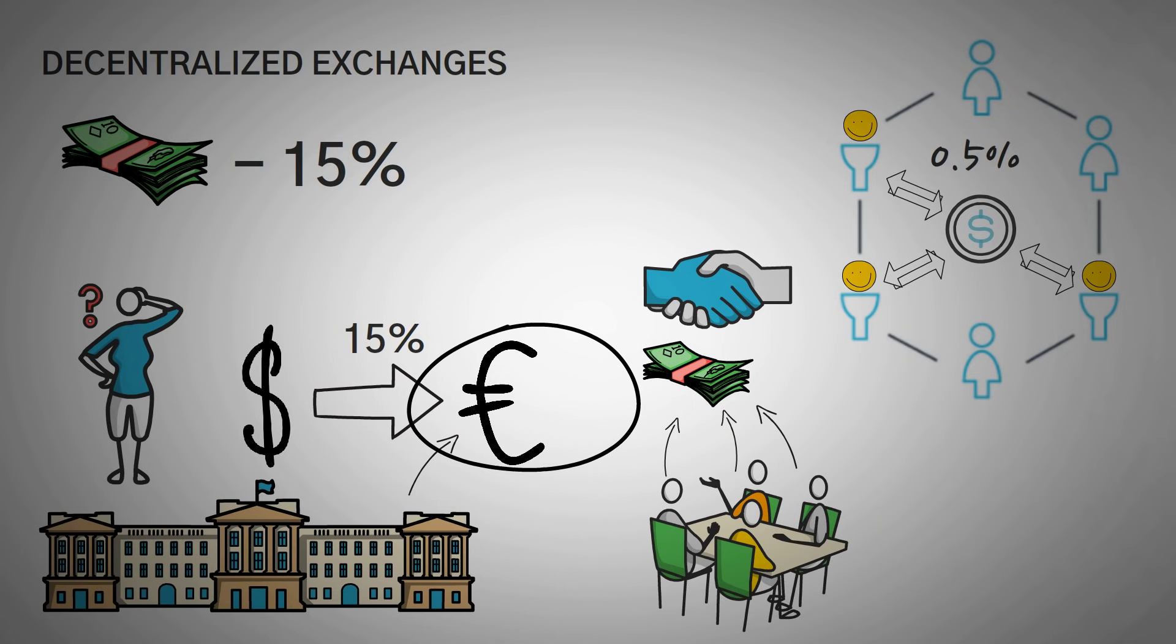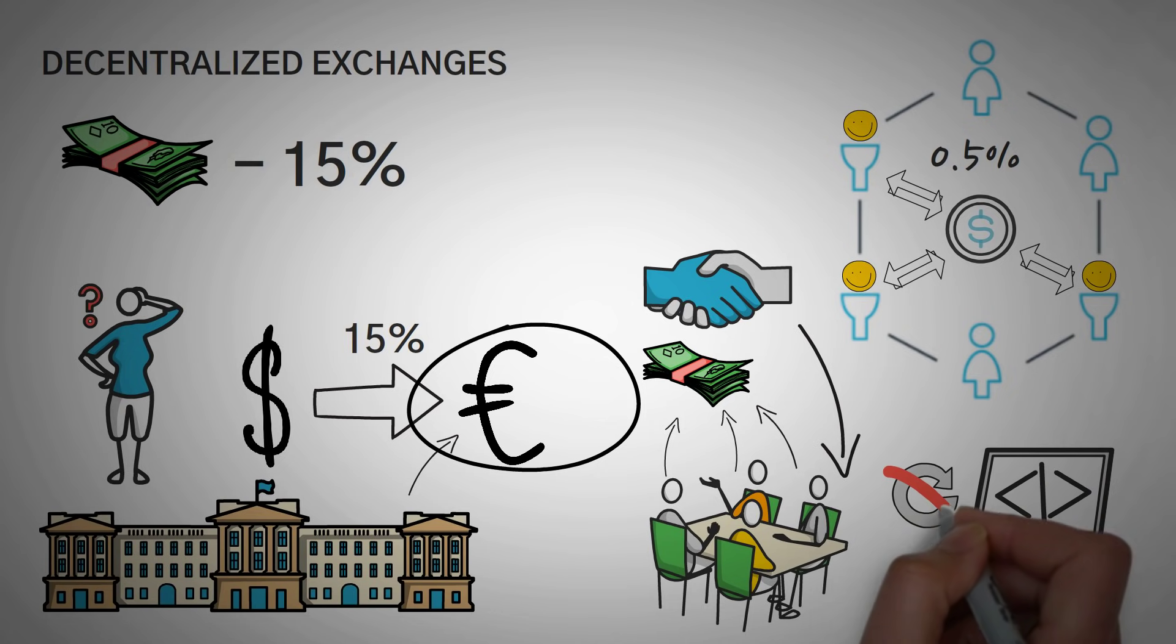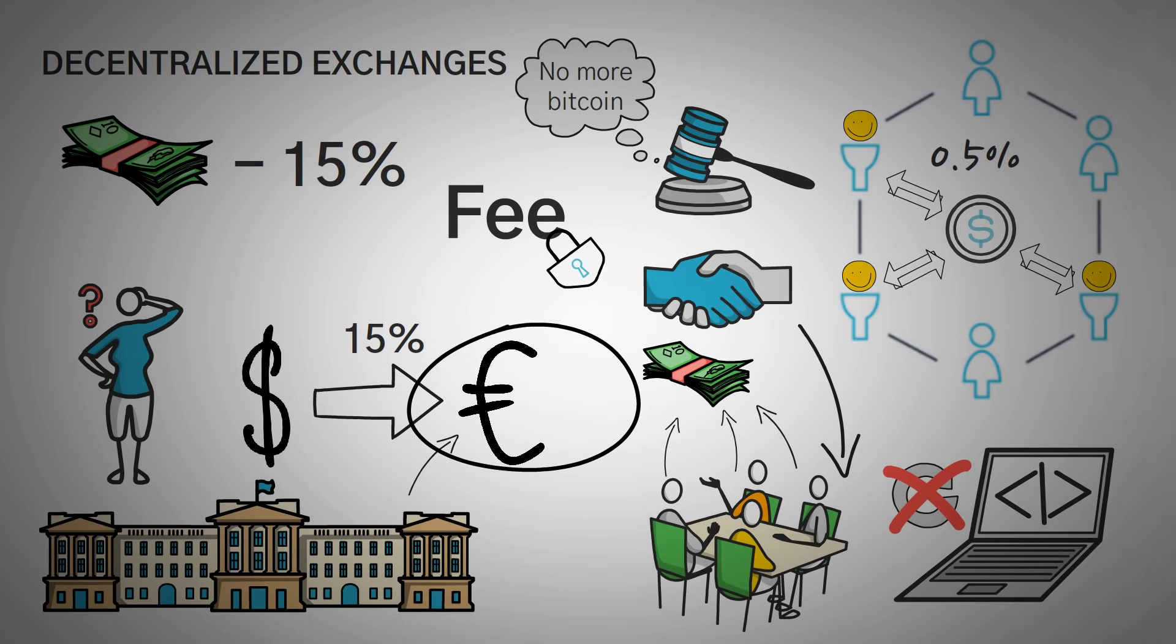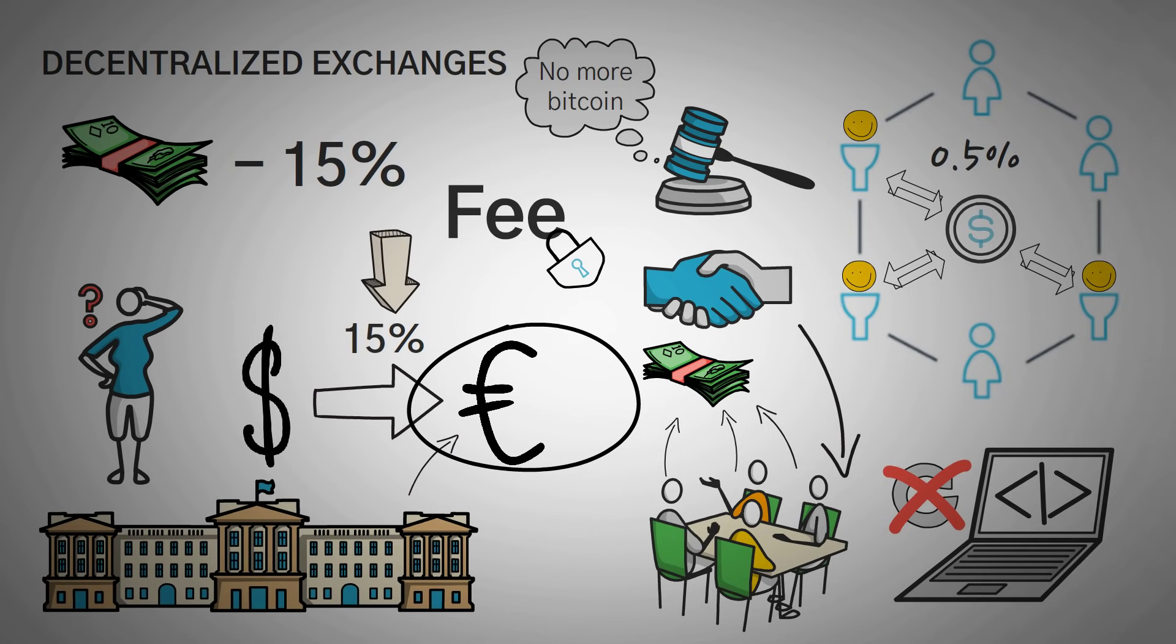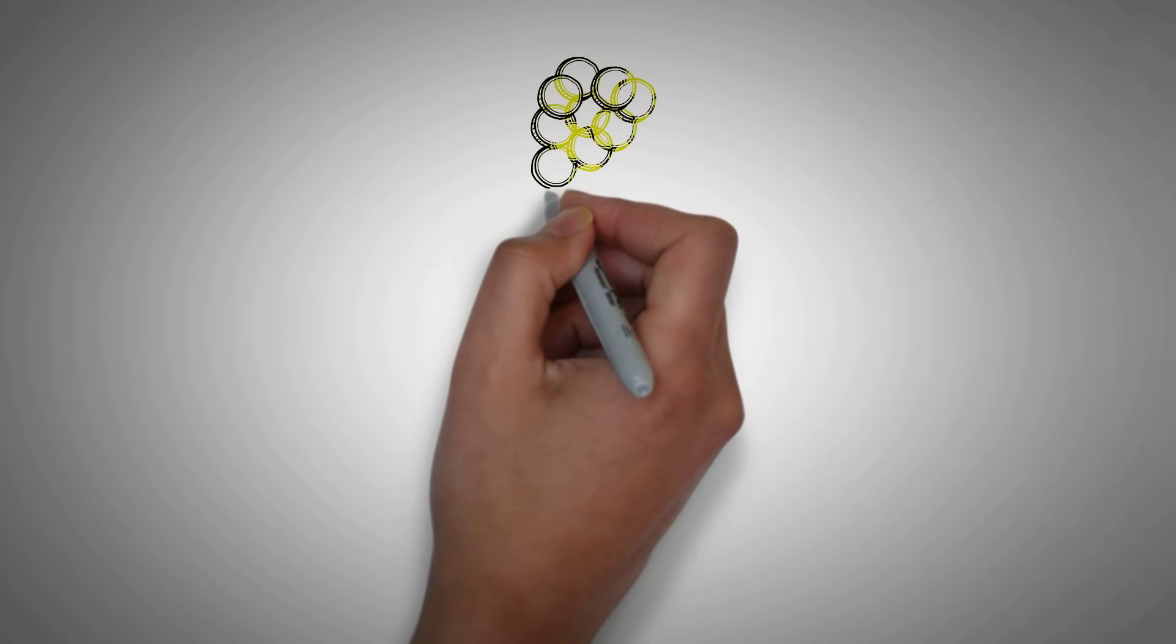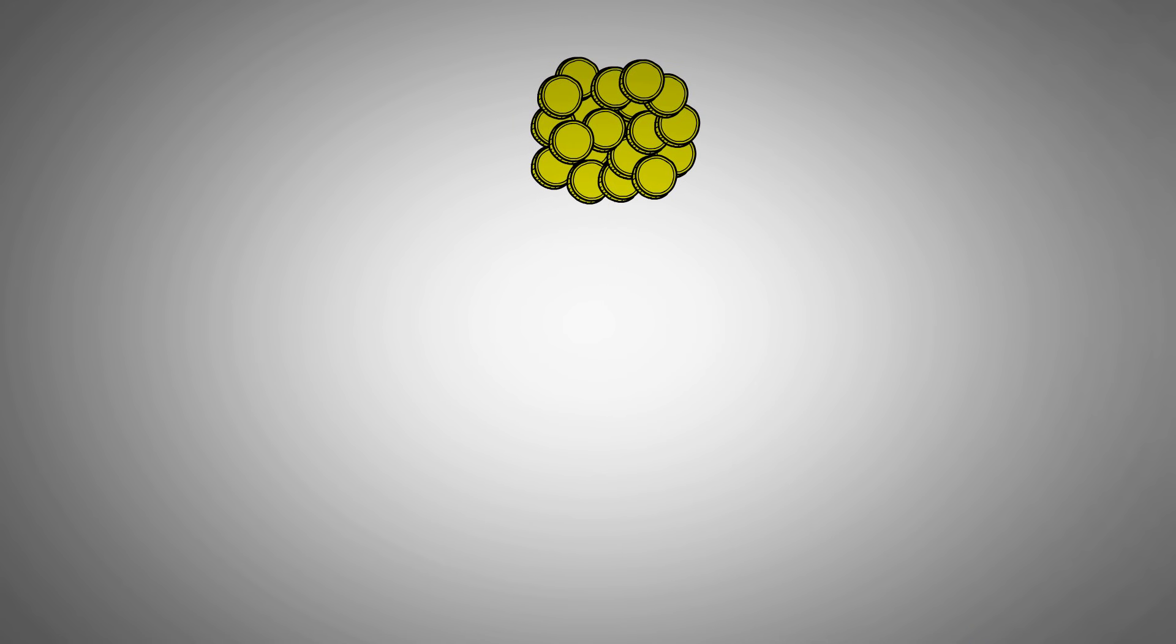And it's all written in code so it doesn't change. A government can't step in and say, you can't buy Bitcoin anymore. The fees and the percentages that you change are locked too. They're written in code, so they don't change and they can't raise to crazy prices like 15%. Decentralized exchanges open the world up to a whole new variety of tokens and coins.